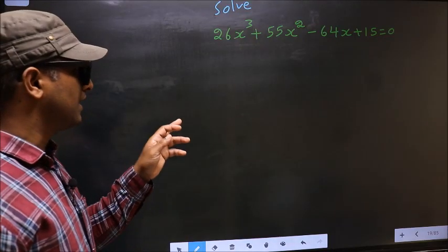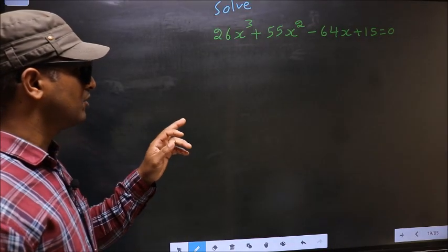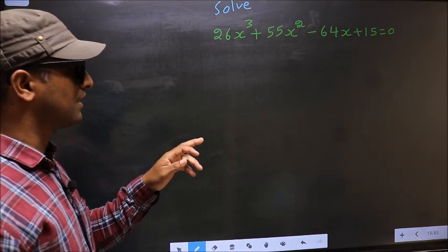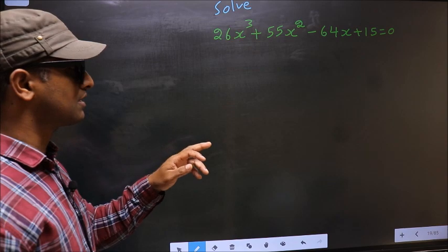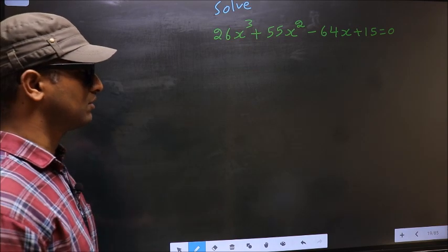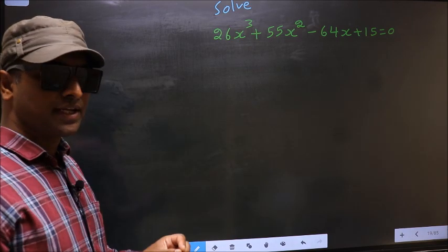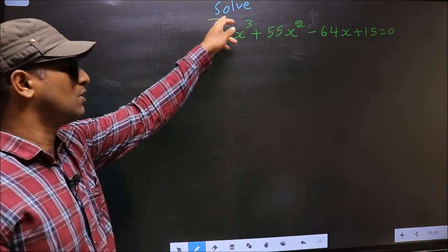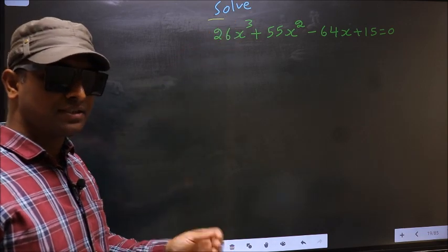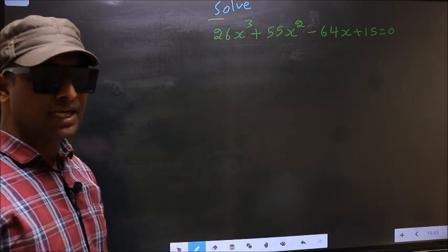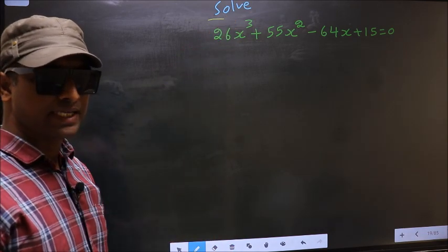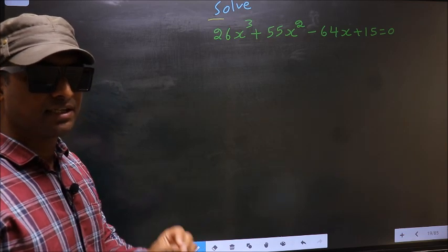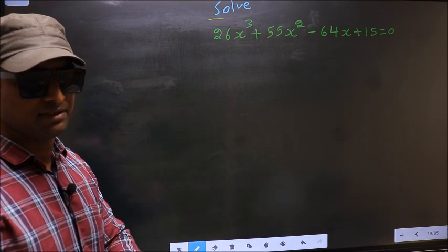Solve 26x cubed plus 55x squared minus 64x plus 15 equal to 0. Here they told us to solve, which means we should get the values of x. For that, we have to change the x term.